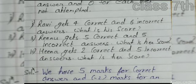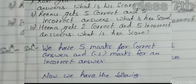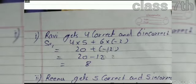Ravi's score: 4 correct answers multiplied by 5 marks each gives 4 multiplied by 5 equals 20. Six incorrect answers multiplied by minus 2 marks gives 6 multiplied by minus 2 equals minus 12. Total score is 20 plus minus 12 equals 8.